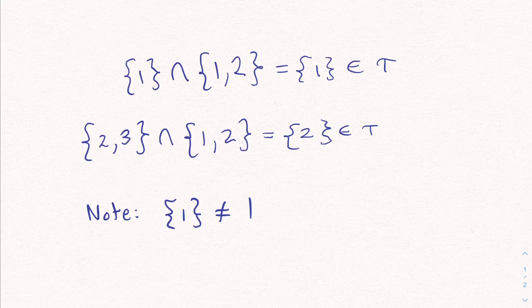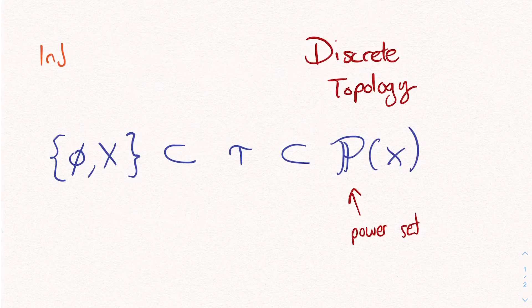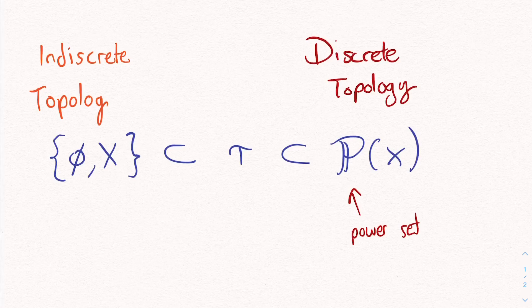Now, I'd like to raise an important point here. The indiscrete topology can be thought of as minimal, and the discrete topology as maximal. That is, for any topology Tau, any collection of subsets of X, it's going to be constrained to be between these two extreme cases.